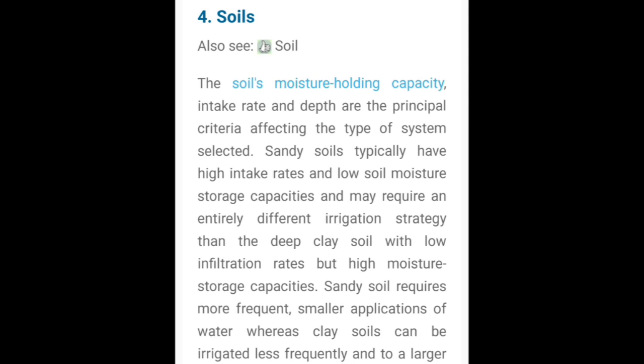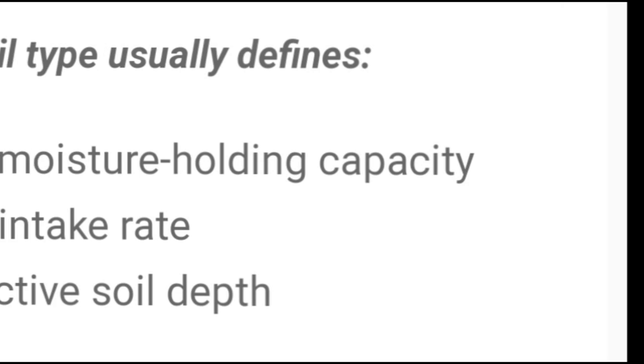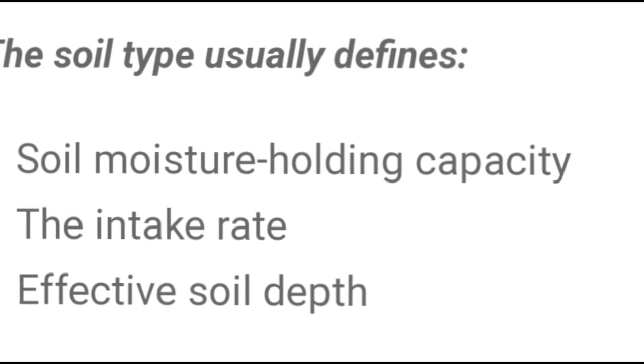Next हमारे पास soil है। Soil भी काफी important है — जैसे बहुत सारी soils ऐसी होती हैं जो पानी को ज़्यादा absorb करती हैं, बहुत सारी ऐसी होती हैं जो पानी को कम absorb करती हैं। जो moisture holding capacity है soil की, वह कैसी है — उस पर भी irrigation method depend करता है। The soil type is usually defined by: first, soil moisture holding capacity; second, the integrated and effective soil depth.